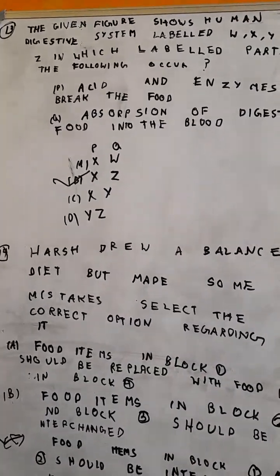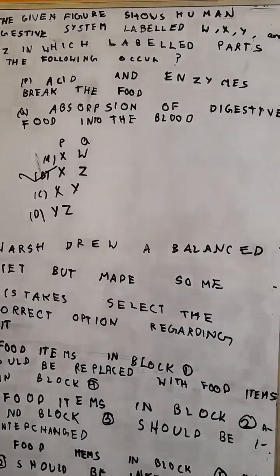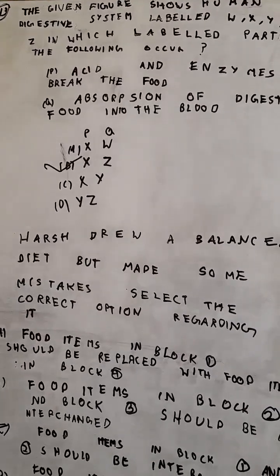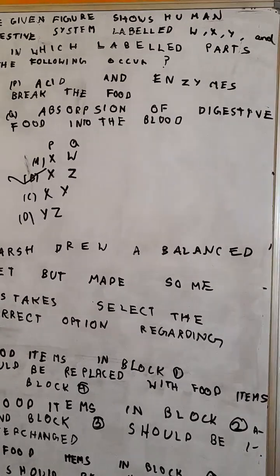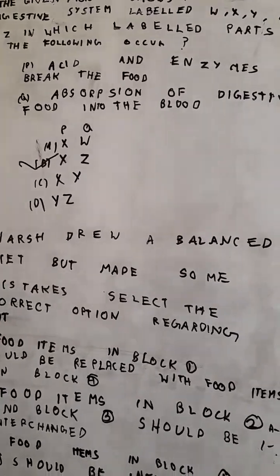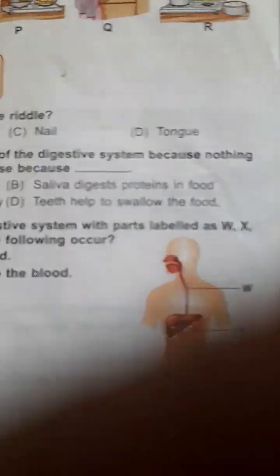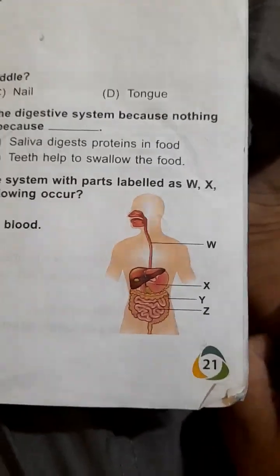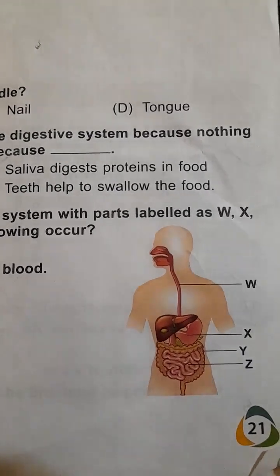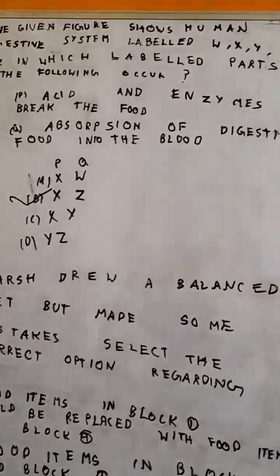The given figure shows the human digestive system labelled W, X, Y and Z. In which labelled parts do the following occur: acid and enzymes break the food, and absorption of digested food into the blood? Acid and enzymes break the food in the stomach. Absorption of digested food into the blood is in the small intestine. So the correct option is option B, X and Z.